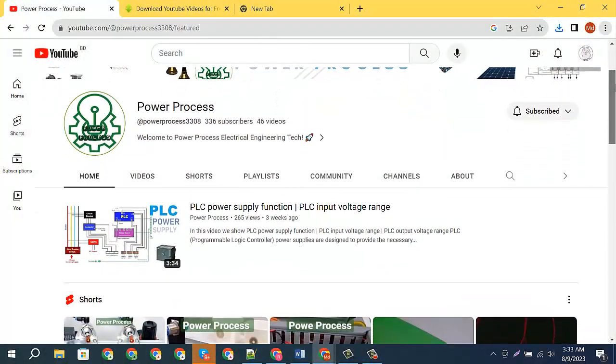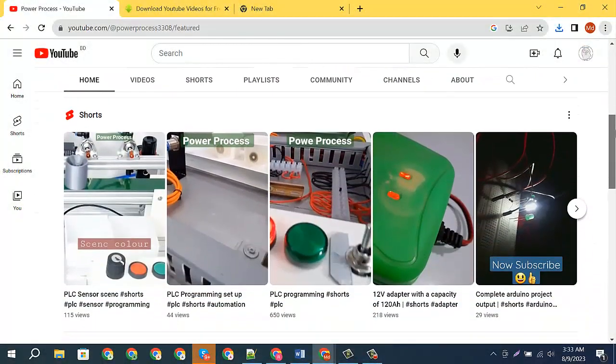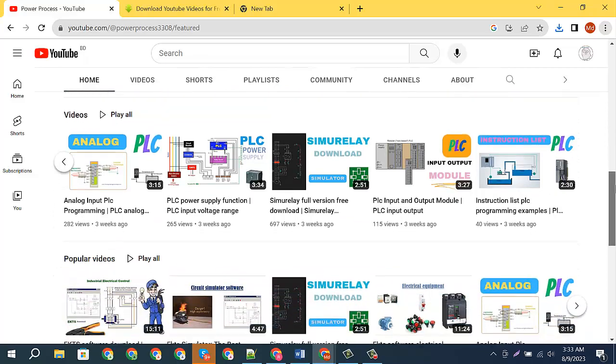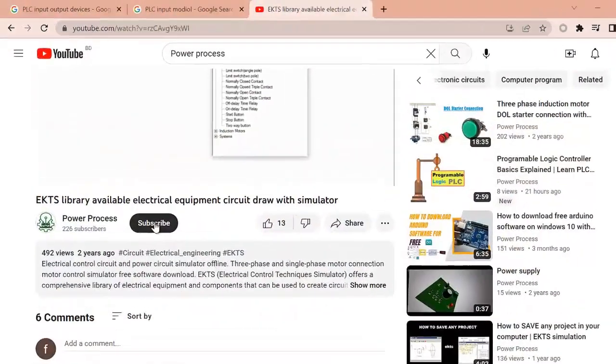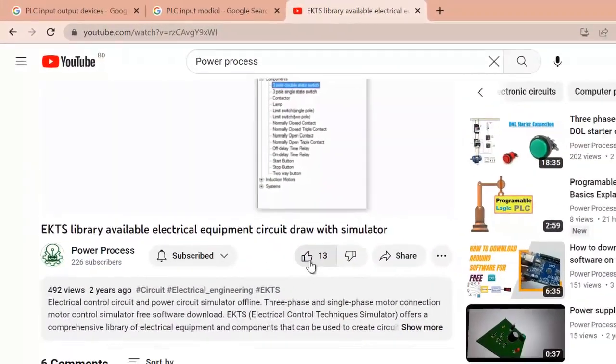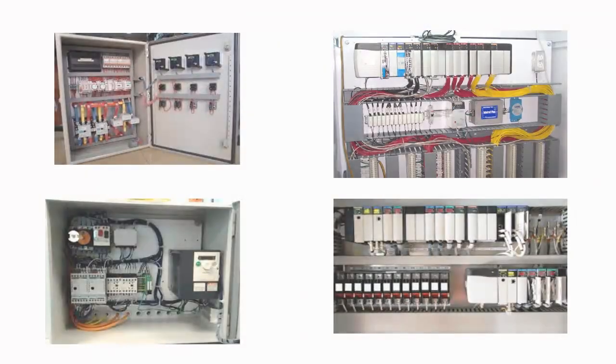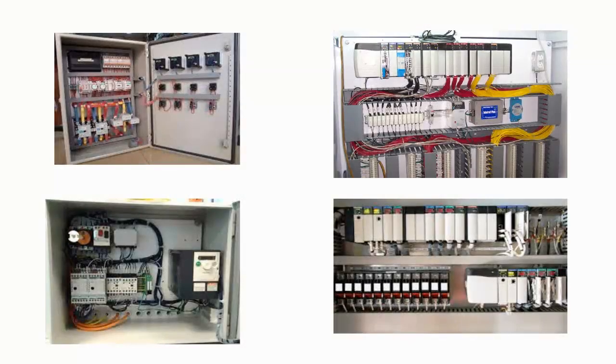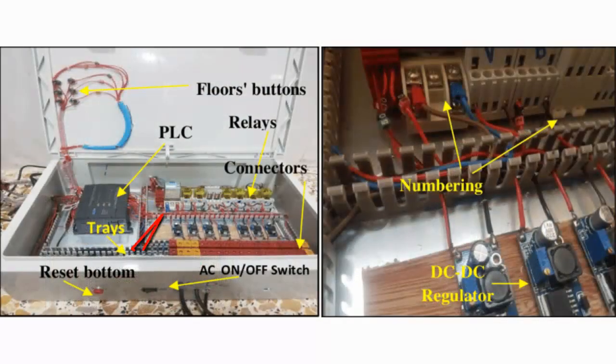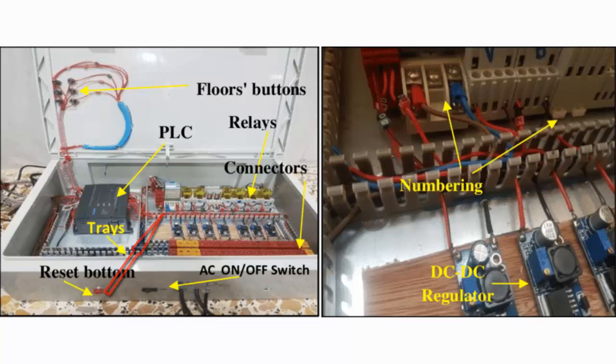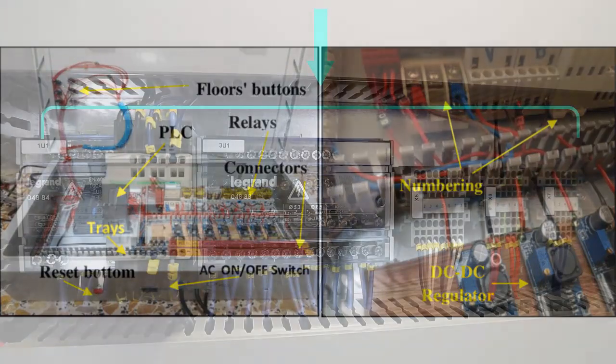Hey there, welcome to Power Process Electrical Engineering Tech. Today we will know how to do PLC control panel wiring. First, make sure you subscribe and like the video. Wiring a programmable logic controller PLC control panel involves connecting various components, devices, and sensors to the PLC in a structured and organized manner. Here's a general guideline on how to wire a PLC control panel.